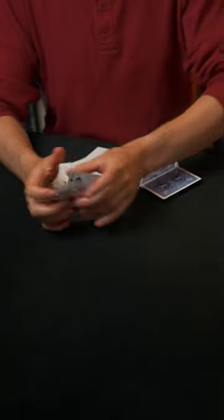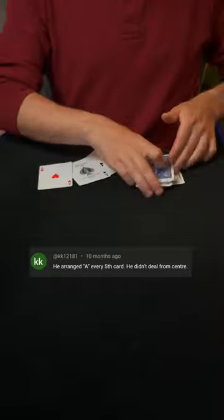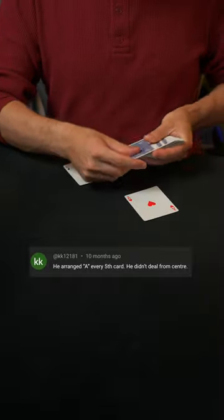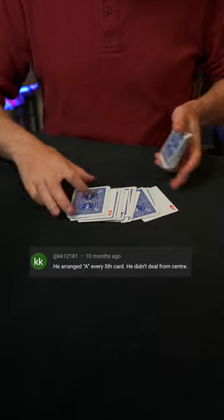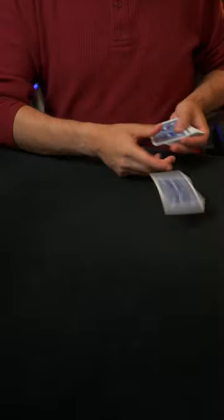Now when I demonstrated this, some people were suspicious. They didn't believe I was actually dealing from the center of the deck. Instead, they thought that I had prearranged the cards by putting four cards in between each ace. This means if I deal a five-handed game, the aces will all end up in my hand.